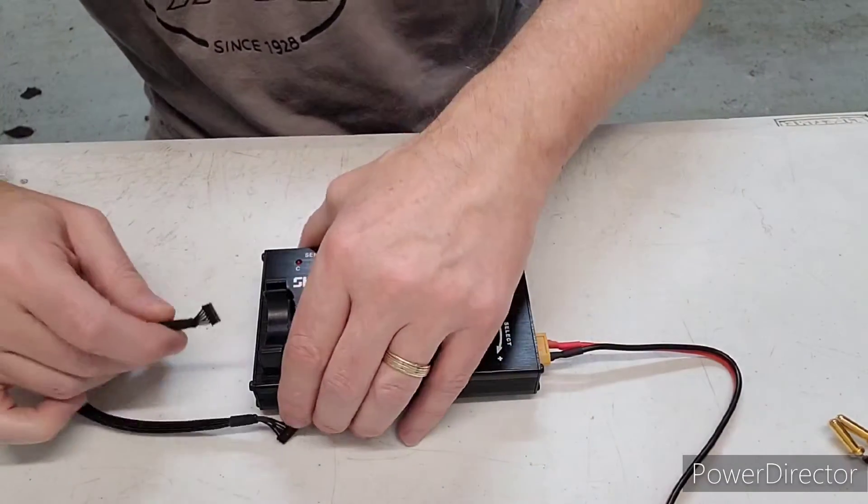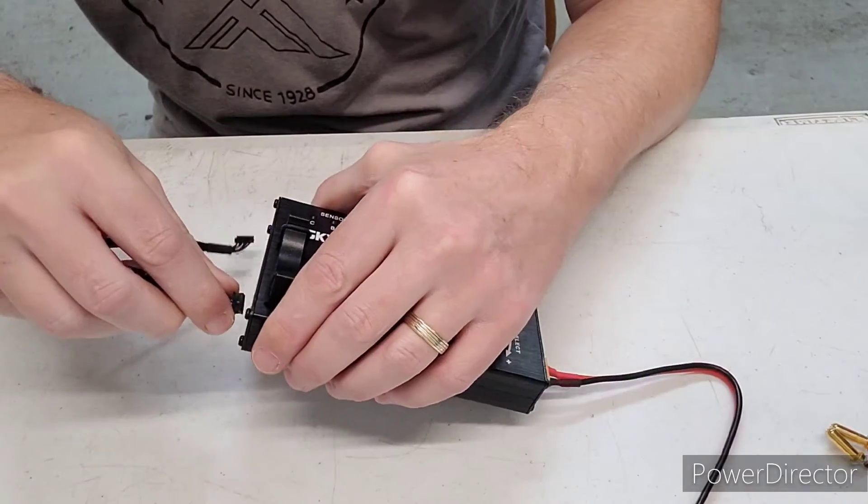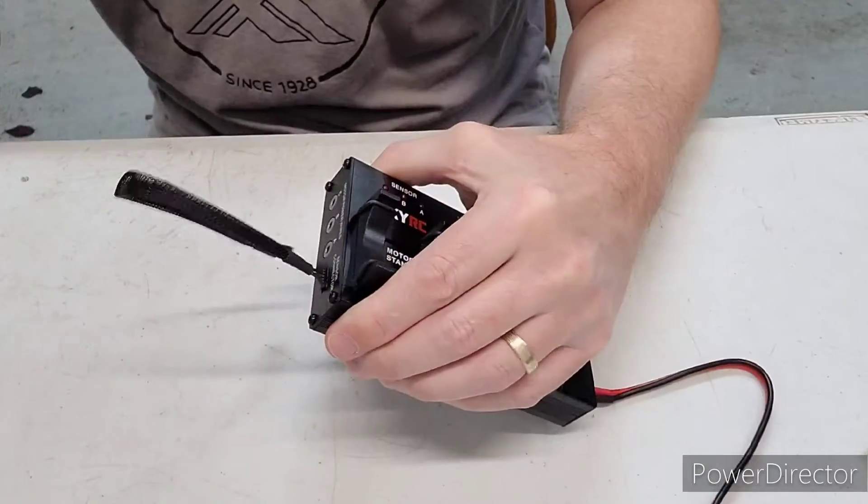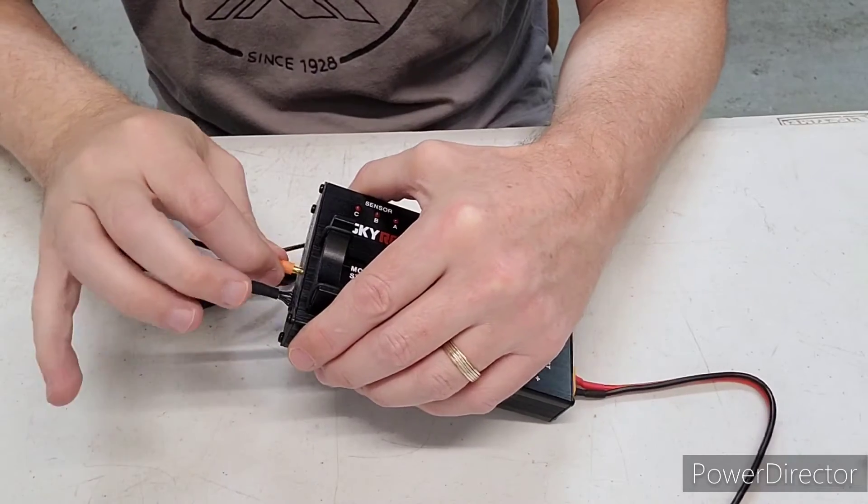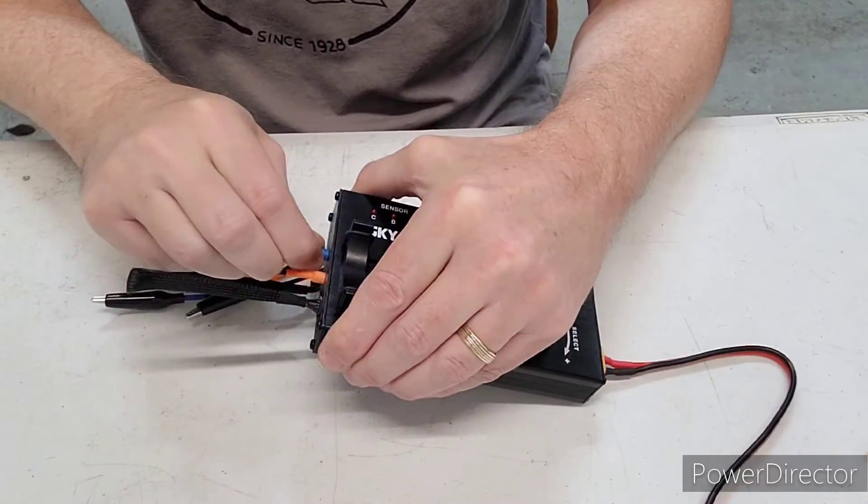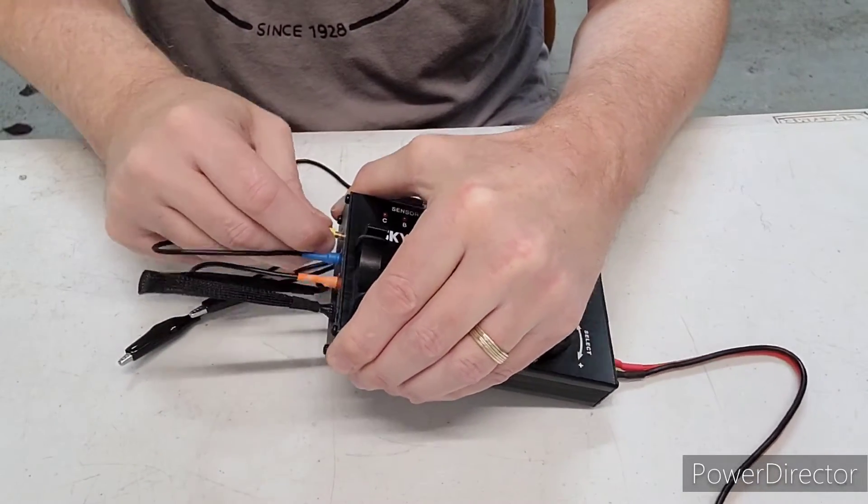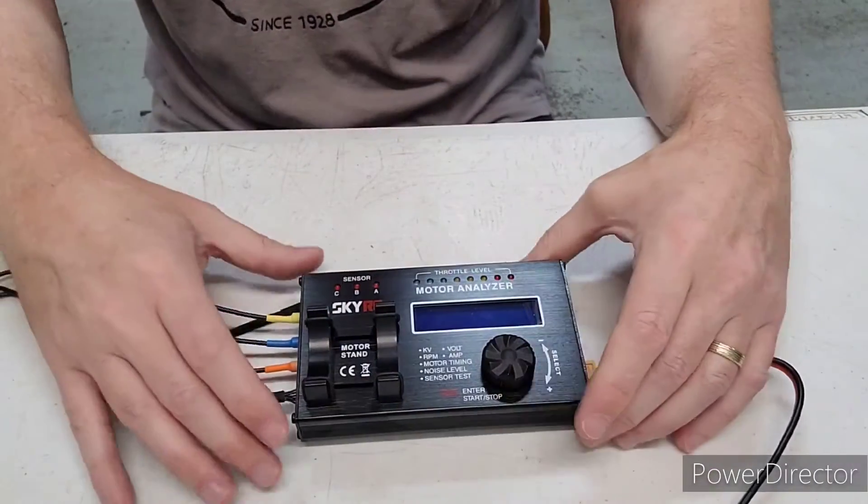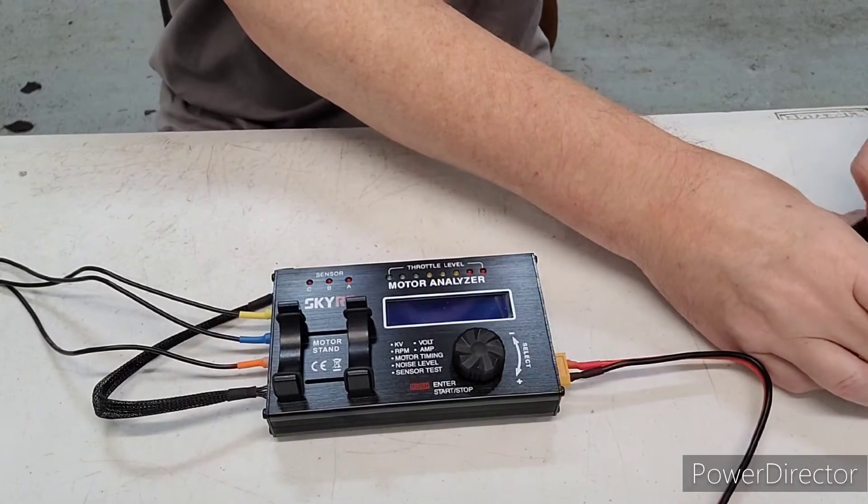And then on this side, you have the sensor wire that you plug in and the A, B and C cables. And they have colors, but I just plug them in randomly. I really don't care too much about colors. Just make sure you hook them up to the motor the same. So that's really all there is to this. And you get your motor and you hook it up.